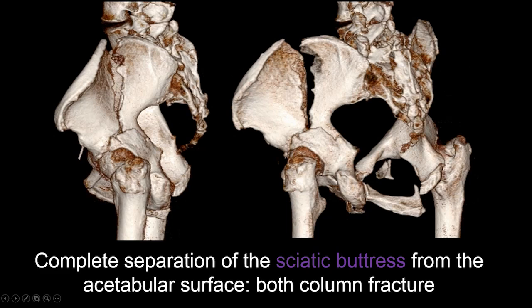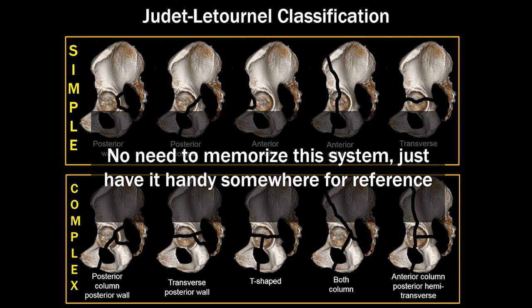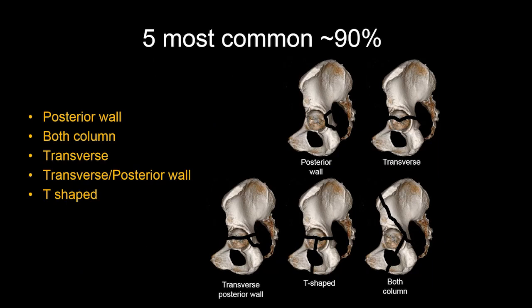On a 3D image, you can confirm: from the sciatic buttress, you cannot reach the acetabular articular surface without going through fractures — this is a both-column associated acetabular fracture. There's no need to memorize the Judet-Letournel classification system; just keep it handy for reference, especially when first learning. For your interest, here are the five most common fracture types — and at this point you have actually seen all ten Judet-Letournel fracture types.